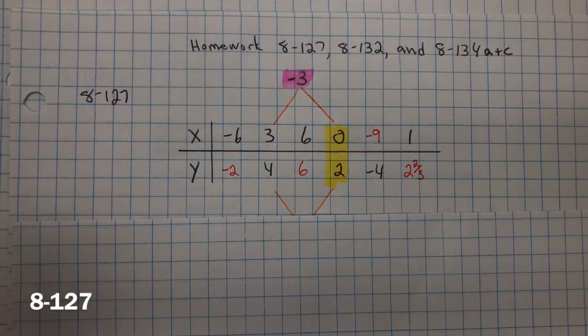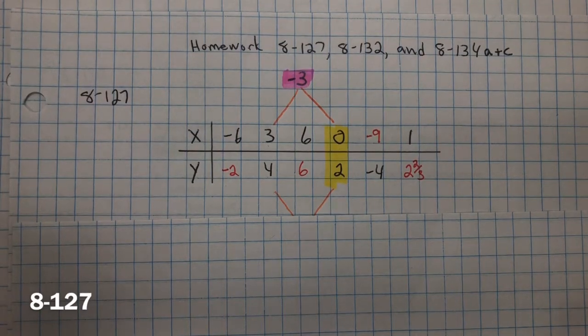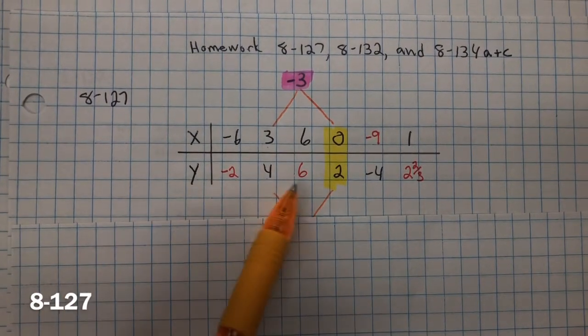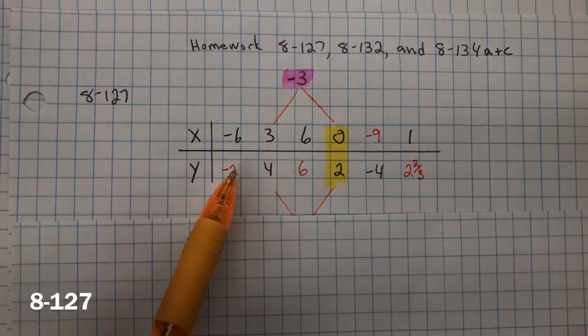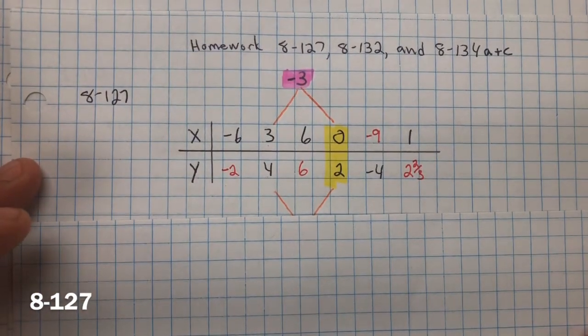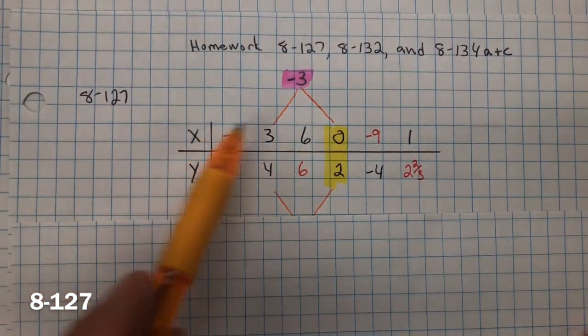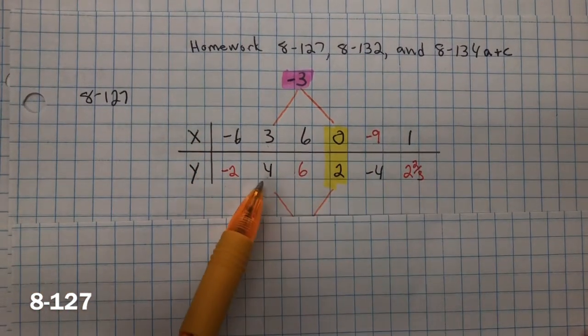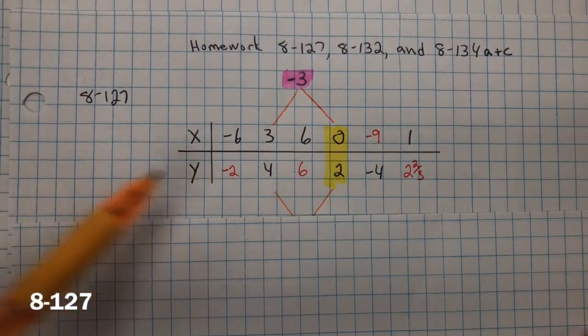For problem 127, I need to complete the table. Well, in red were the missing values, and I found that by creating a rule. There are several ways that you could find these missing values, but I'm just using a rule.